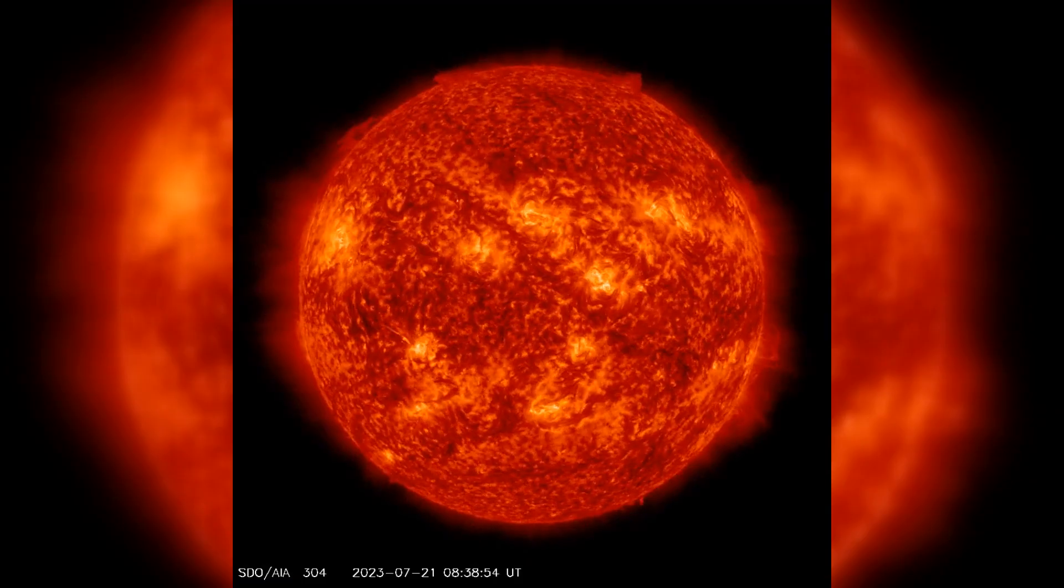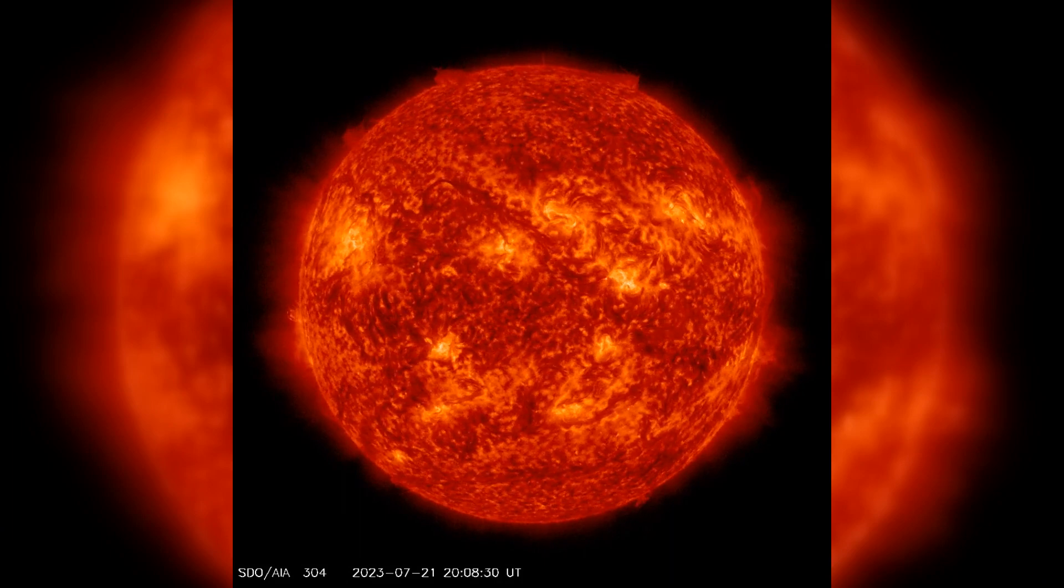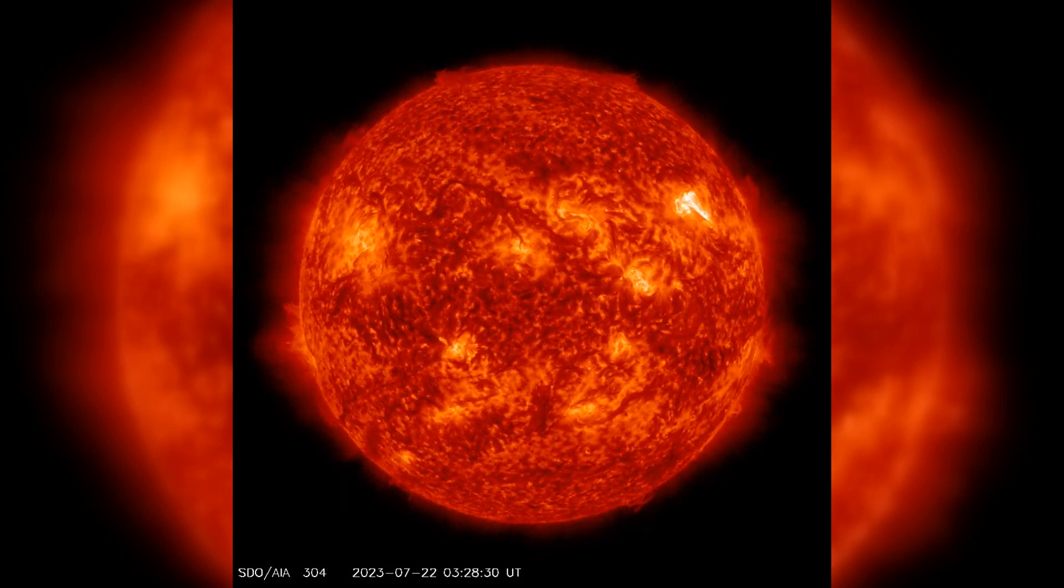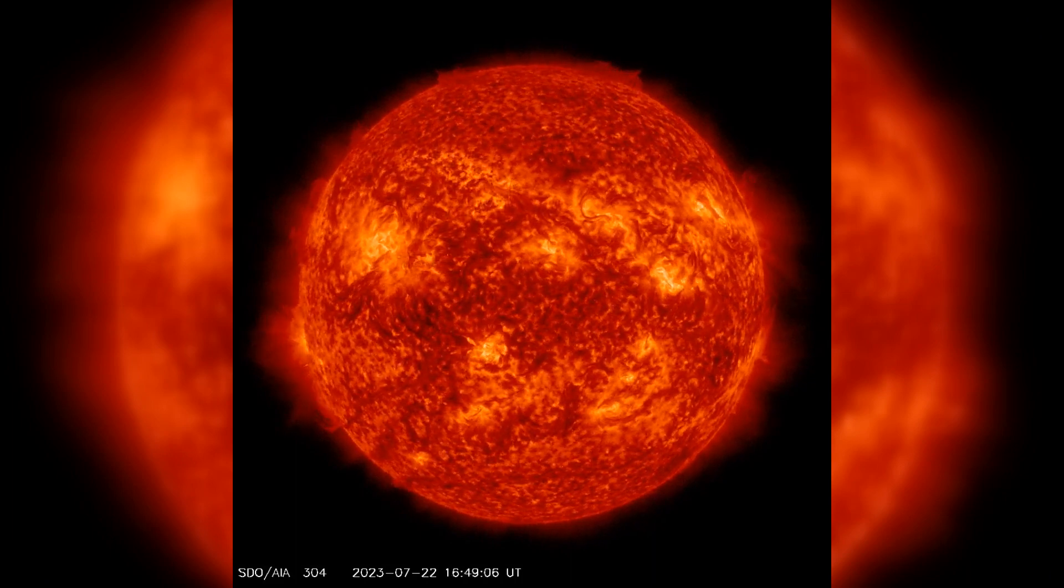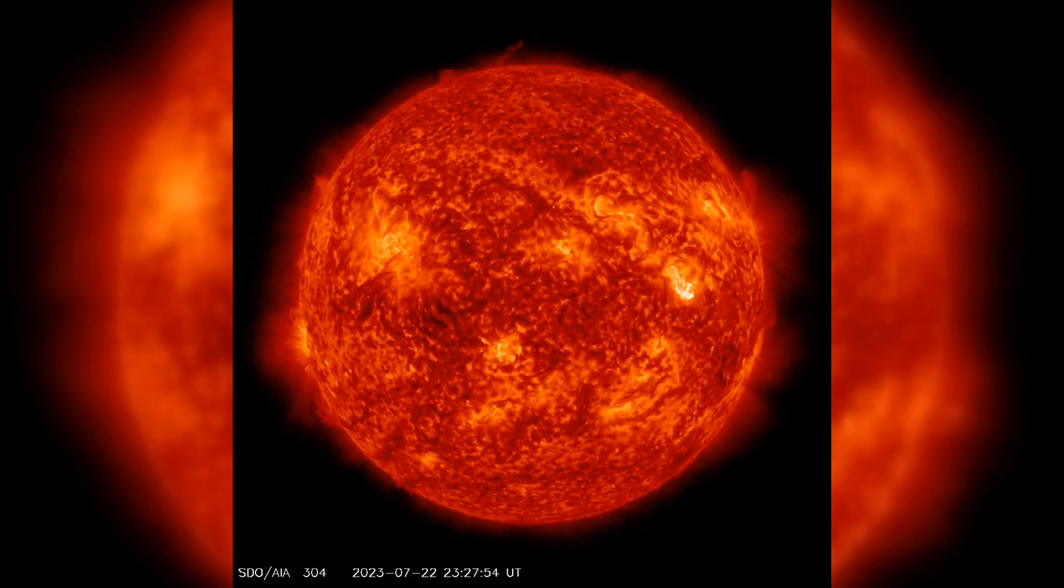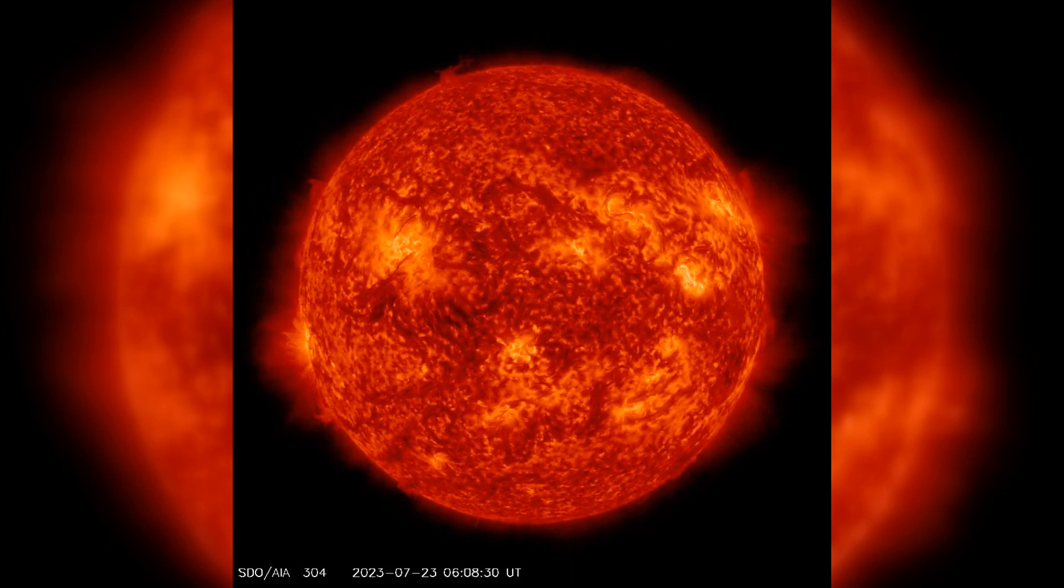The solar activity over the past 24 hours was relatively low, with Region 3373 being the most active, producing a C9.9 flare, the largest flare during this period.